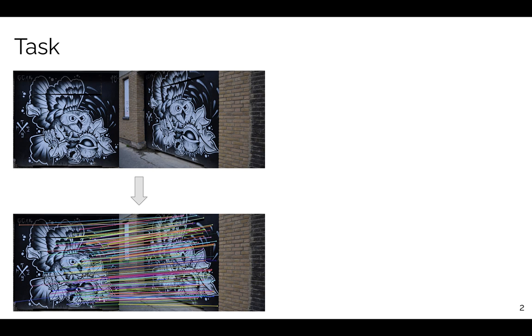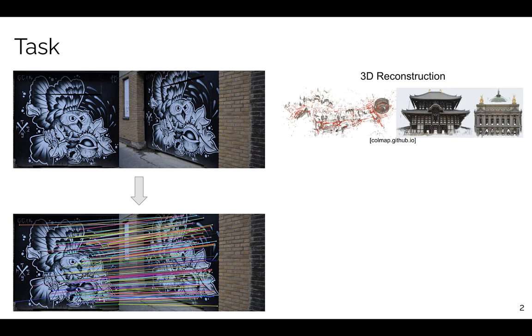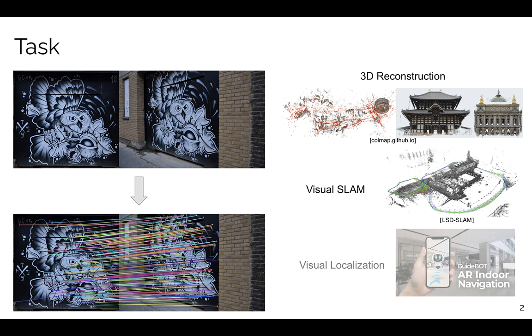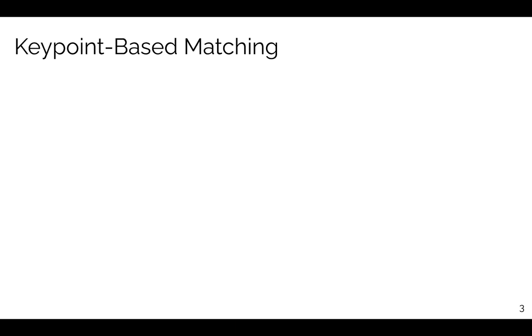Given a pair of images, our task is to establish pixel correspondences. This is an essential task for topics like 3D reconstruction, visual SLAM, and visual localization. A commonly adopted solution for this task is keypoint-based matching.